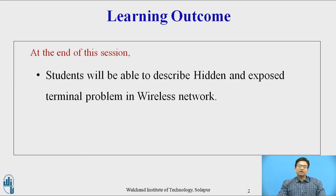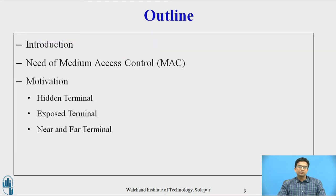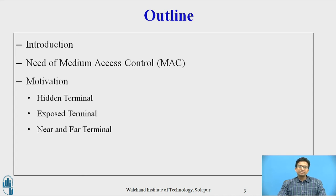The learning outcomes are: students will be able to describe hidden and exposed terminal problems in a wireless network. In this session, we are going to discuss the introduction of medium access control, need of medium access control, motivation, and what are hidden terminal, exposed terminal, near and far terminal.